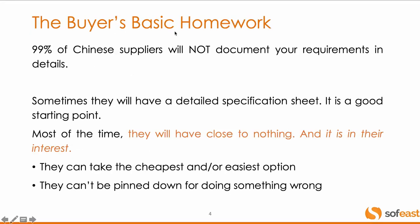Let's start with the basic homework. What I consider the basic homework of the buyer is to document your requirements. You can't expect the Chinese supplier to do this, especially small to medium sized Chinese suppliers — this would just not happen. Sometimes they will have some kind of detailed specification sheet, which is great, especially for electronic products. But most of the time they will not have this kind of specification sheet — they will have close to nothing. They see it as something in their interest to protect themselves: if something is not defined and documented, it gives them the freedom to choose the cheapest option.